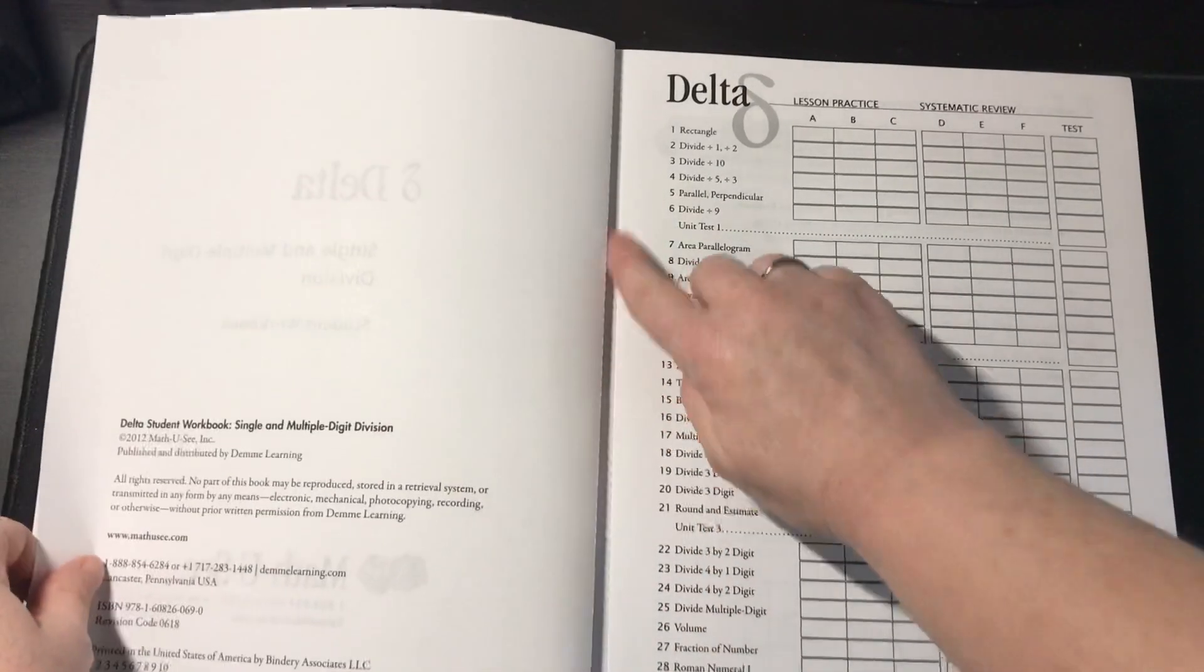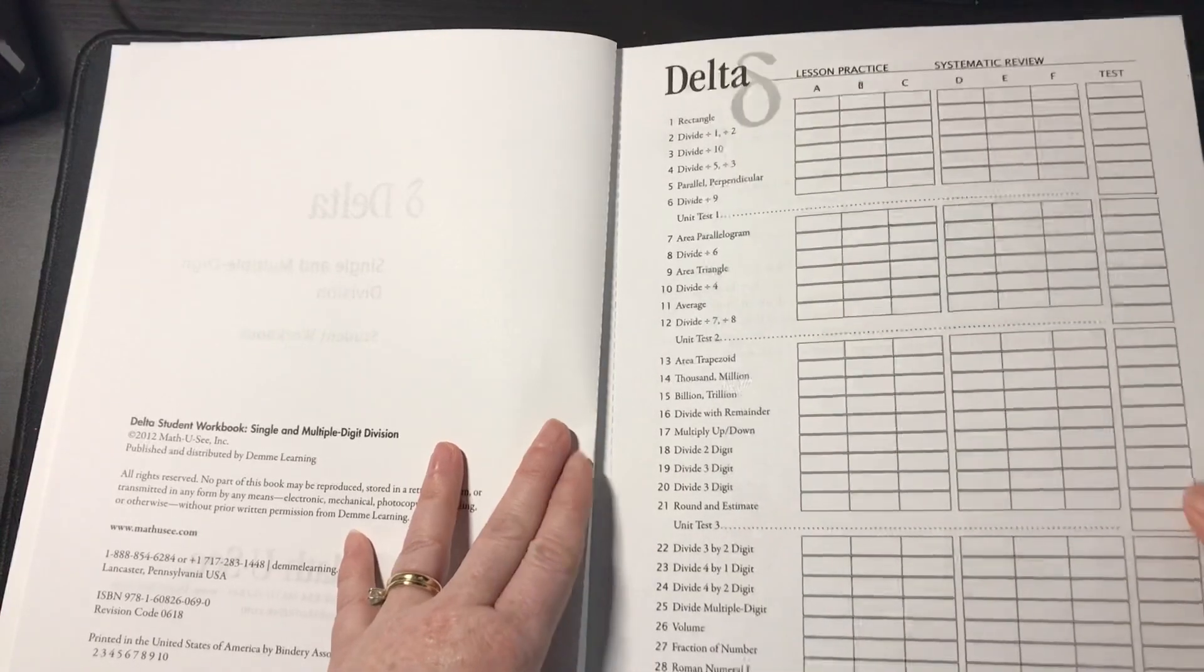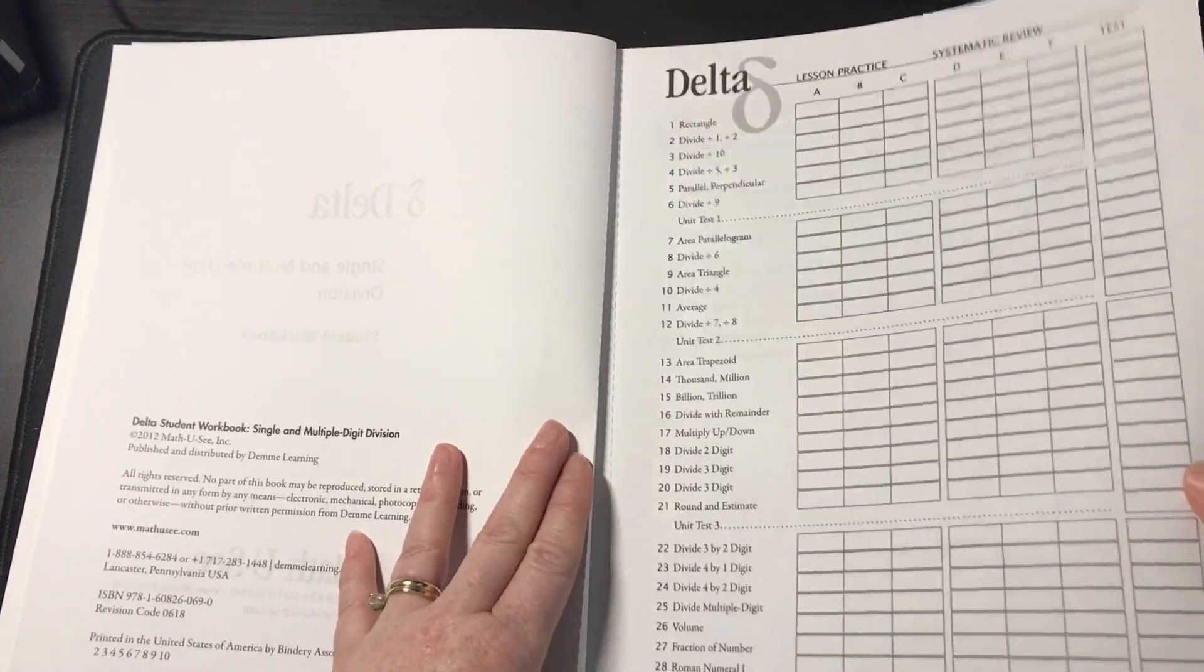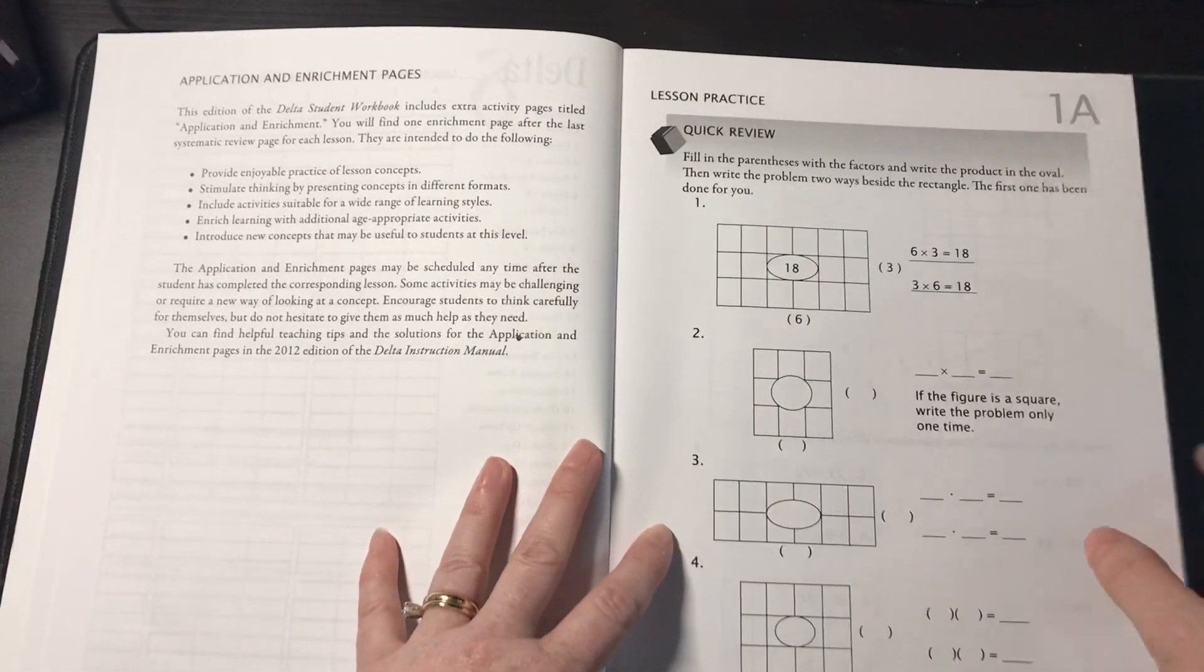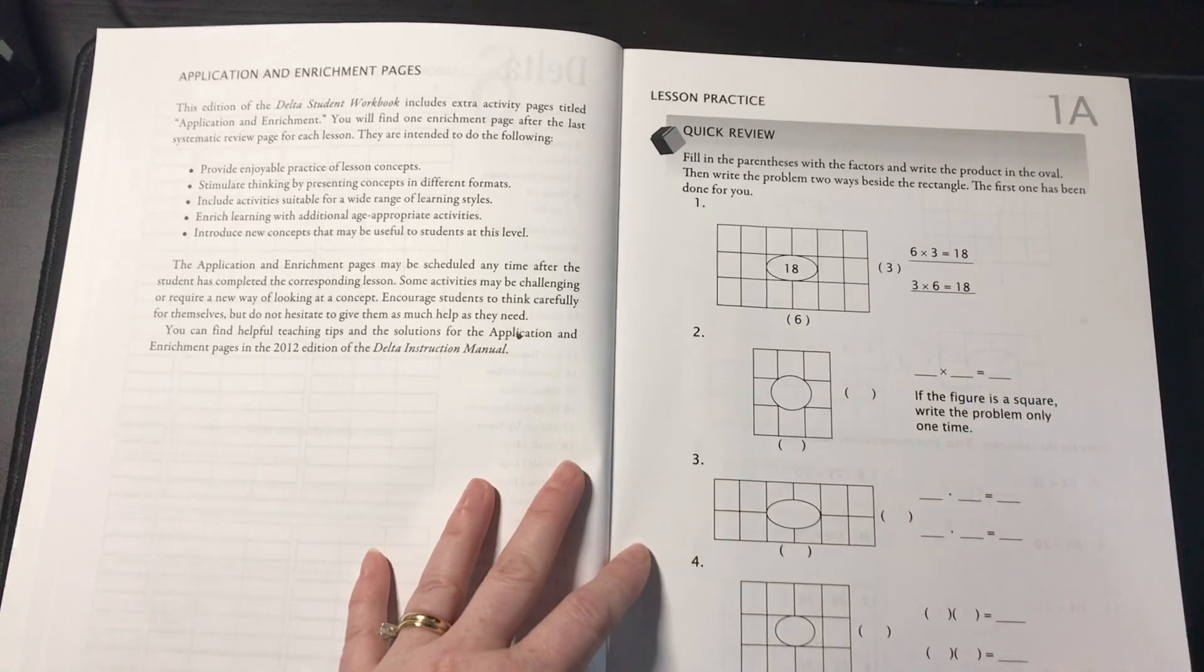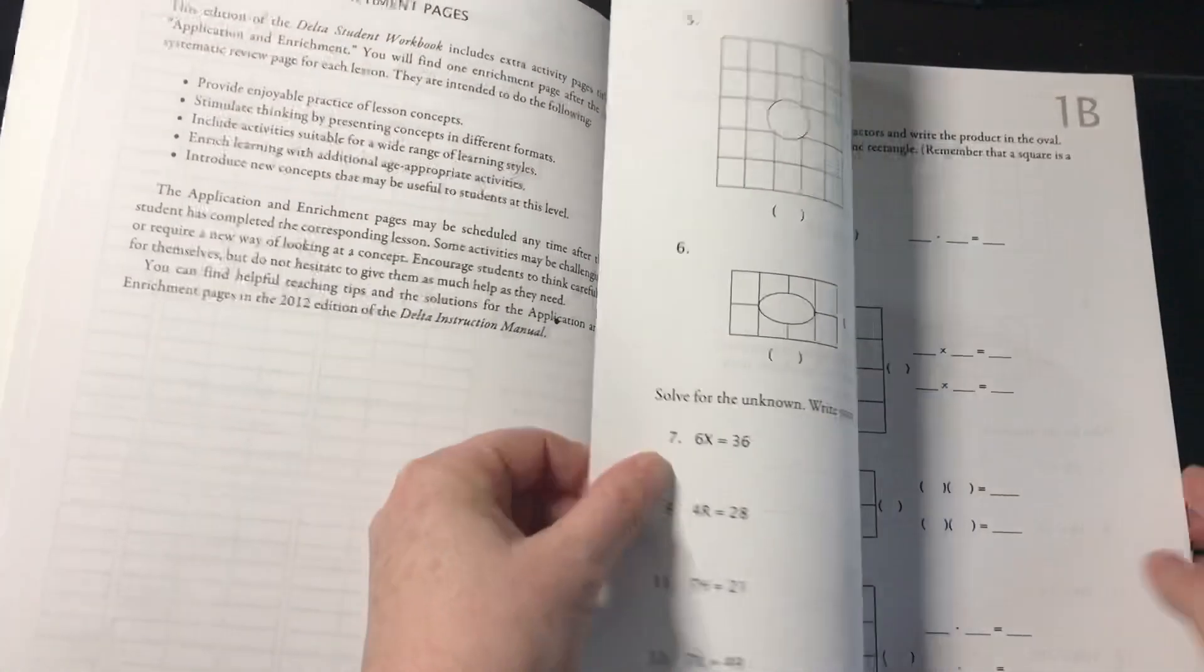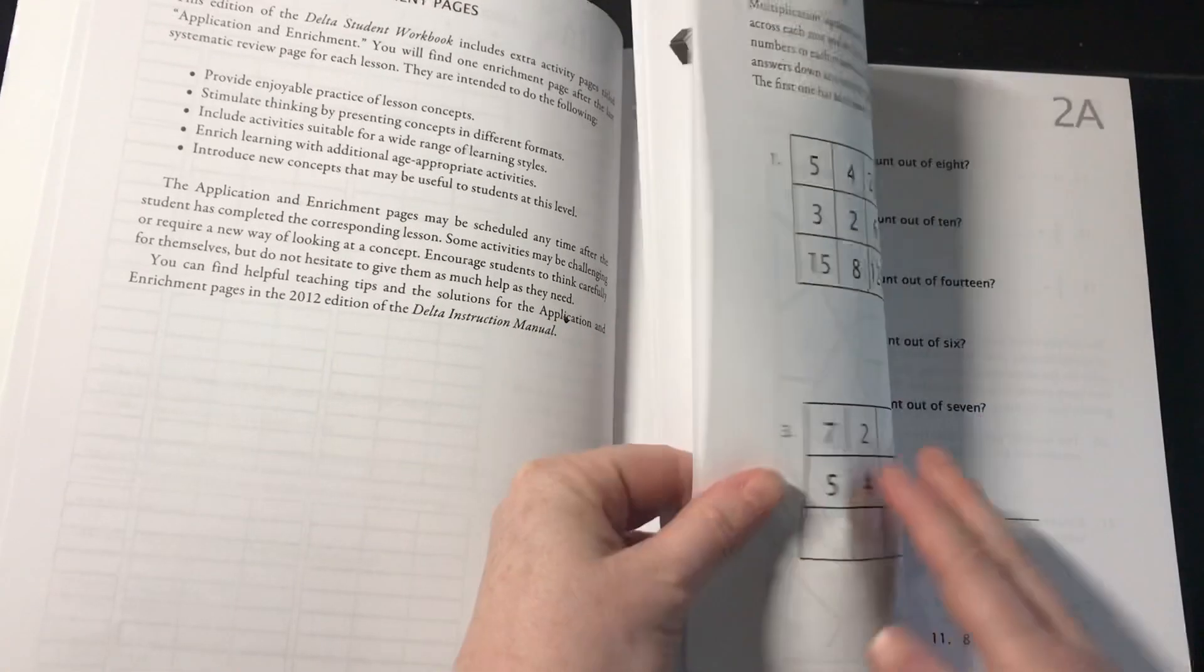Here's a student workbook. The sheets are perforated, so that's nice. You can tear them out. This is for you to keep track of their scores and what they've actually done. So here we go. Lesson Practice 1A. This is definitely a review of Gamma. And if you've done Gamma, this will be no problem for your student.